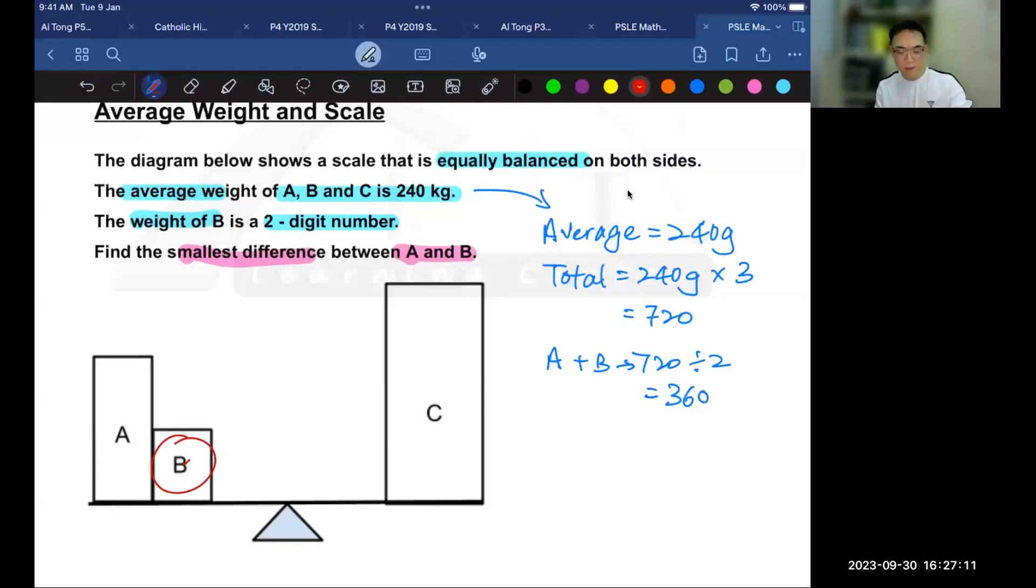B, which is the smaller number, needs to be as big as possible. And it has to still be a two-digit number. So what number is that?